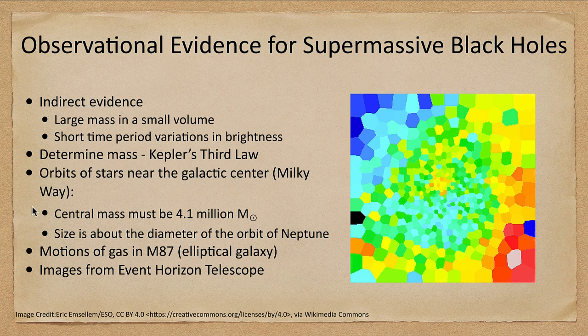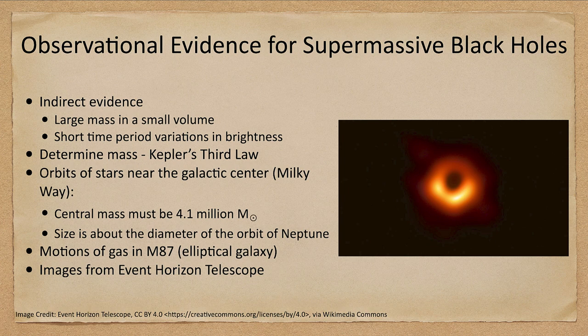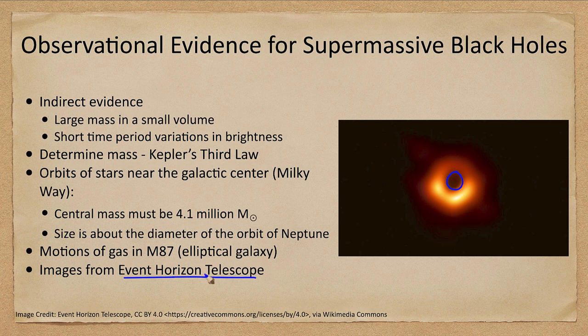We also now have direct imaging of black holes from the Event Horizon Telescope. We can use that to see the shadow of the event horizon against background material. While we cannot actually see the black hole directly, we see its shadow — both in our galaxy and in the galaxy M87.